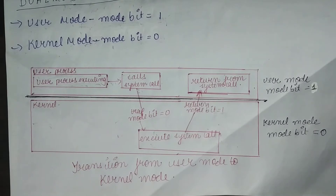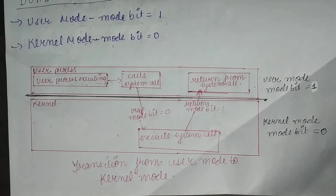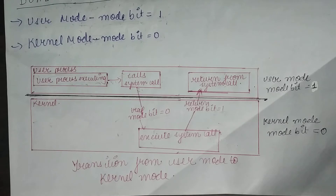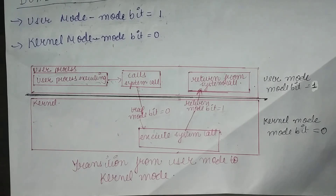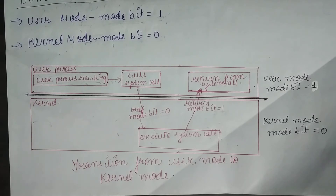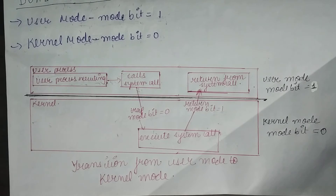Why do we have dual modes of operation? It is important for proper execution of the operating system. Since we have the operating system and application programs both present, we must be able to distinguish between user code and operating system code. For example, if there was only a single mode — MS-DOS is an example of a single-mode operating system, which has no mode bit. In that kind of situation, a user process can wipe out the operating system by writing over it with data, or multiple programs are able to write to a device at the same time — which should not happen.